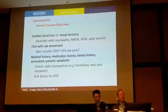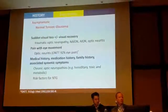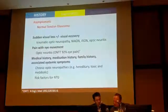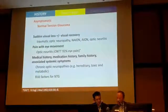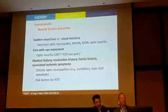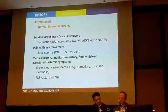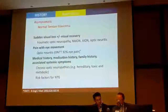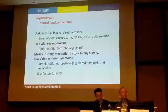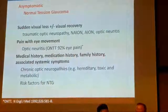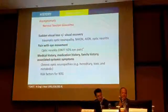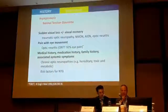The medical history, medication history, and family history are very important. In the medical history, you can ask about febrile illnesses as a child, which might suggest meningitis. Medication history, particularly in Asia, includes asking about the use of ethambutol in the past. Family history of unexplained visual loss should prompt consideration of hereditary optic neuropathy, along with any associated systemic symptoms — particularly risk factors for normal tension glaucoma.